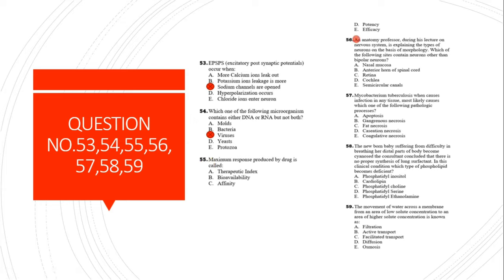Question 55: Maximum response produced by a drug is called efficacy. Question 56: Based on morphology, which site contains bipolar neurons? Bipolar neurons are present in the anterior horn of the spinal cord as motor neurons, while pseudo-unipolar neurons are present in sensory areas such as the dorsal horn or nasal mucosa.